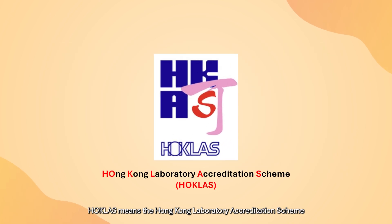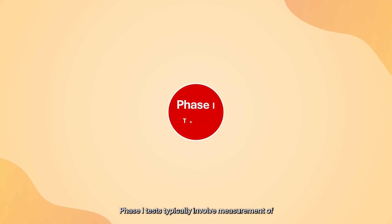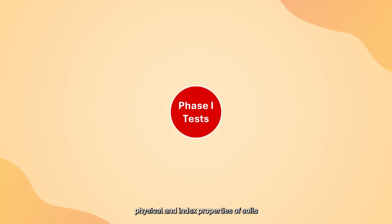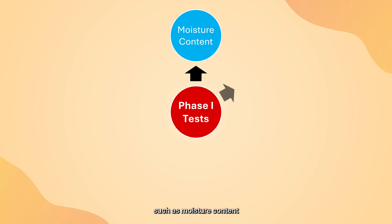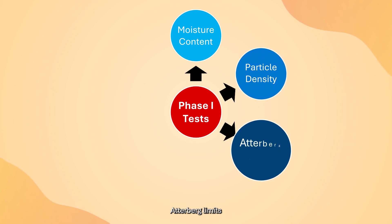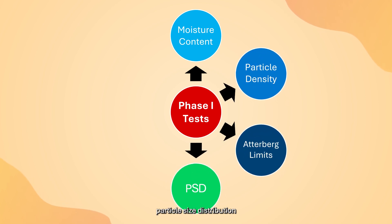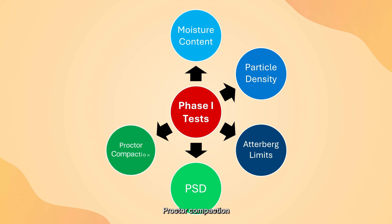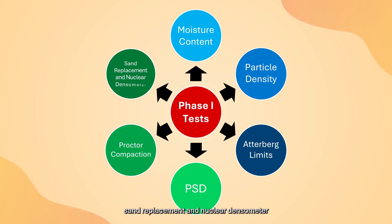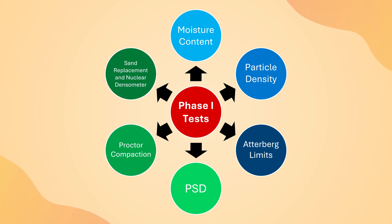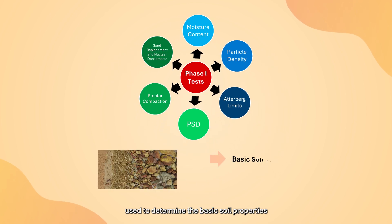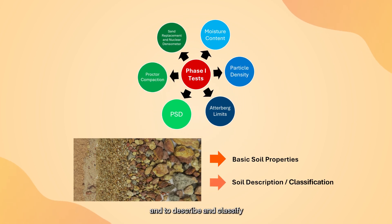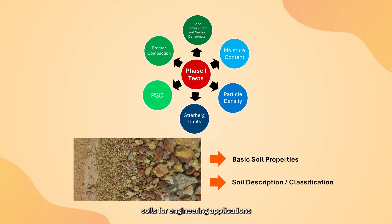HOKLAS means the Hong Kong Laboratory Accreditation Scheme. Phase 1 tests typically involve measurement of physical and index properties of soils, such as moisture content, particle density, Atterberg limits, particle size distribution, Proctor compaction, sand replacement, and nuclear densometer. These tests are generally used to determine the basic soil properties and to describe and classify soils for engineering applications.